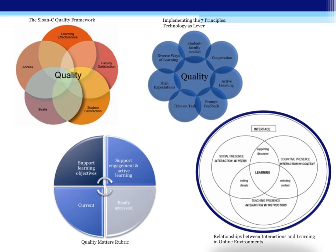Another quality metric is the Quality Matters rubric. While the rubric has criteria for every aspect of your course design, there is one section devoted to technology use. The criteria in that category state that the technology should be current and easily accessed, and that it should support learning objectives, engagement, and active learning. The criteria of interactions, which is the foundation for much of the research on quality online learning, states that good teaching encourages student-to-teacher, student-to-student, and student-to-content interactions. Tools that support these interactions would contribute to the quality of your online course.